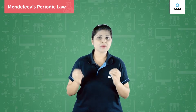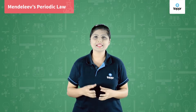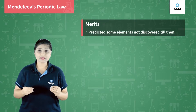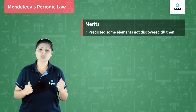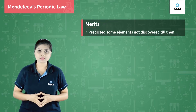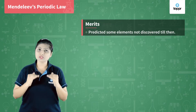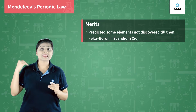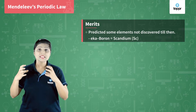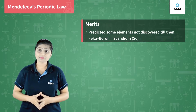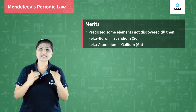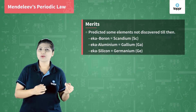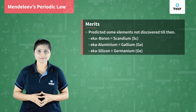Let us see what are the merits of Mendeleev's periodic table. Mendeleev had already predicted that there will be certain elements which will be discovered after some years, and the elements were really discovered. The Eka-boron that Mendeleev had named is now known as Scandium, Eka-aluminium is known as Gallium, and Eka-silicon is now known as Germanium.